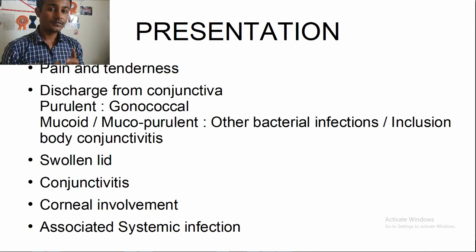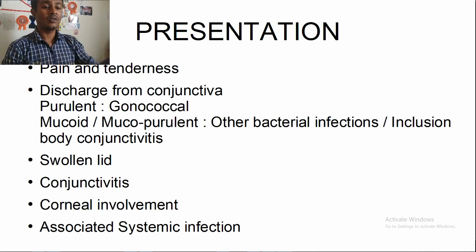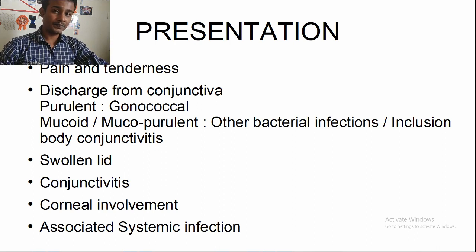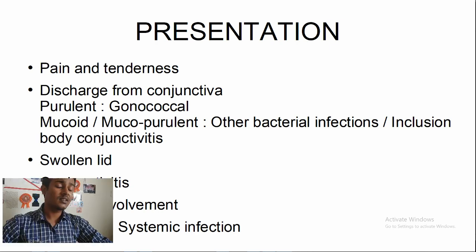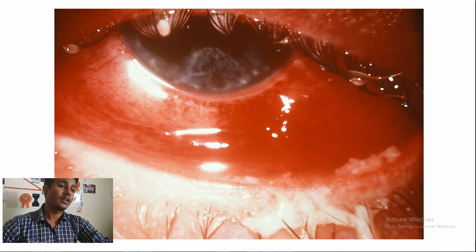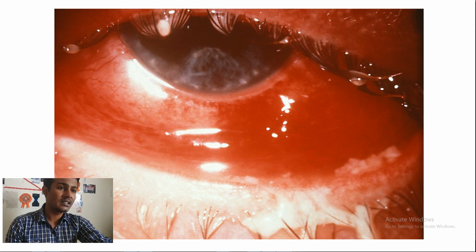Since it's a conjunctivitis, you're going to have conjunctival injection, dilated blood vessels, and discharge. The type of discharge will vary by organism. If it's Pseudomonas or other bacteria, you'll have mucopurulent discharge. If it's gonococcal, it's going to be heavily purulent with swollen eyelids, corneal involvement at later stages, and you may also suspect associated systemic infection. The image shows horrible conjunctivitis with matting of eyelids and prominent medial blood vessels.